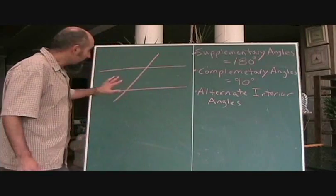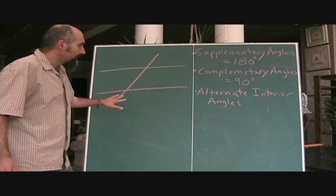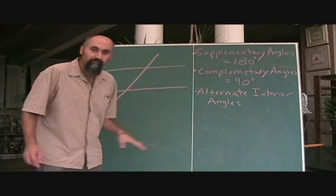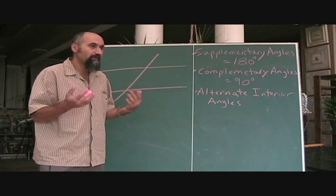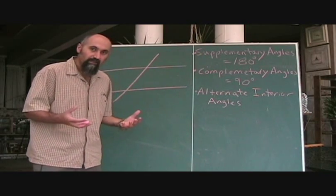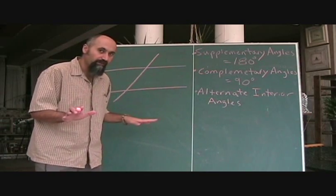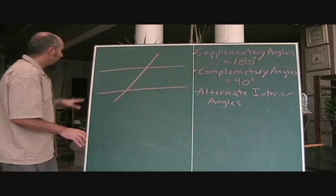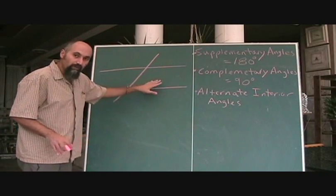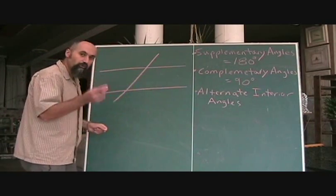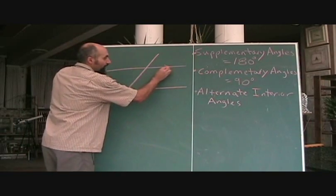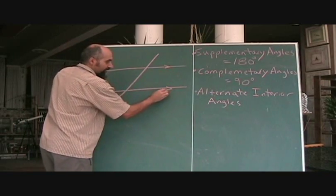We're still talking about geometry. One aspect of geometry that really comes up a lot is the relationship between parallel lines. Whenever they draw two lines and want to show that they're parallel, what they do is put arrows on them like this.